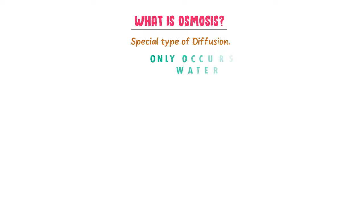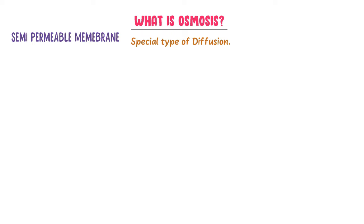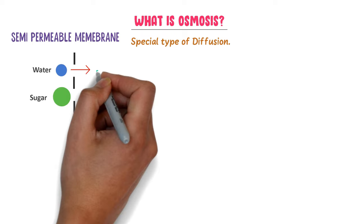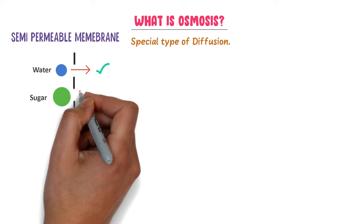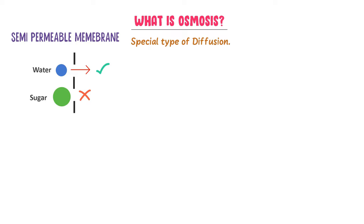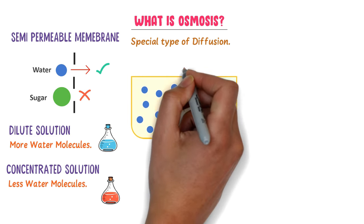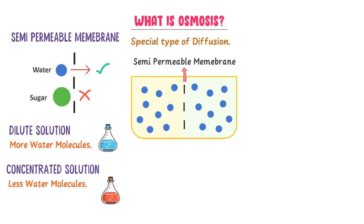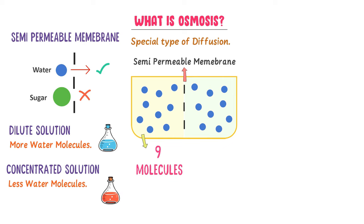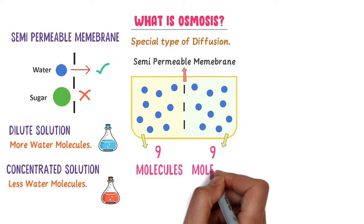To learn osmosis, we must understand what a semi-permeable membrane is. A semi-permeable membrane only allows water molecules to pass through — it does not allow big molecules like sugar or salt. You should also understand dilute solution and concentrated solution. In a dilute solution, there are more water molecules present, while in a concentrated solution, there are comparatively fewer water molecules. Now consider Case 1: a semi-permeable membrane divides the system into two parts, each with nine molecules of water.